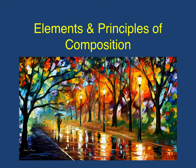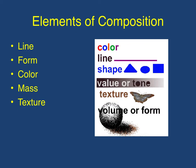These are the tools that you will use during class when we look at specific works of art. First, let's start with the elements of composition. There are five main elements: line, form, color, mass, and texture.